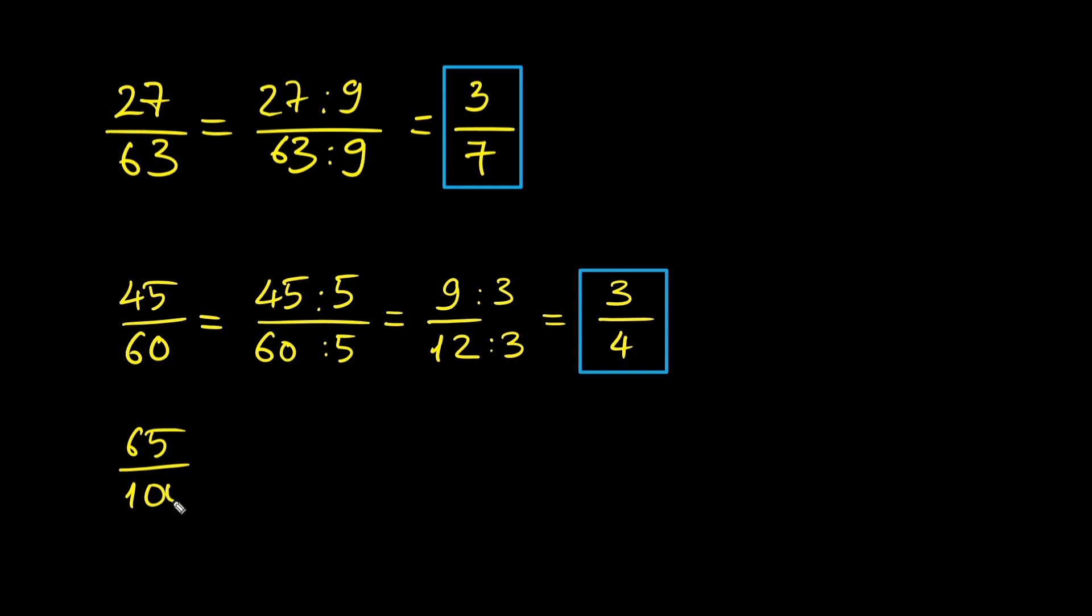Let us try one more example: 65 over 100. If both numbers end in 5 or 0, they are divisible by 5. 65 divided by 5 is 13. 100 divided by 5 is 20.